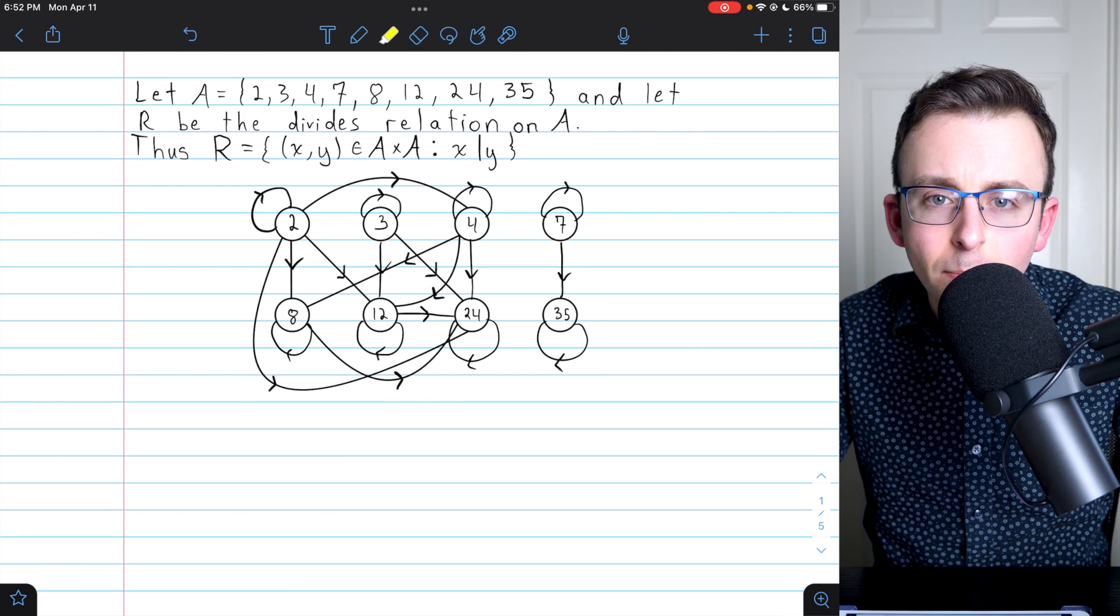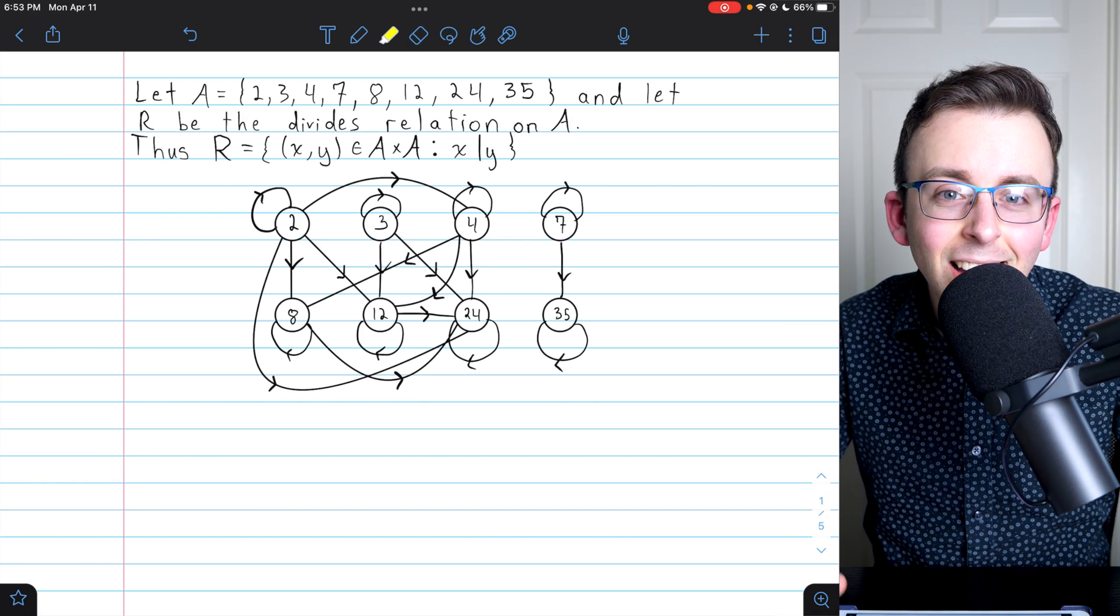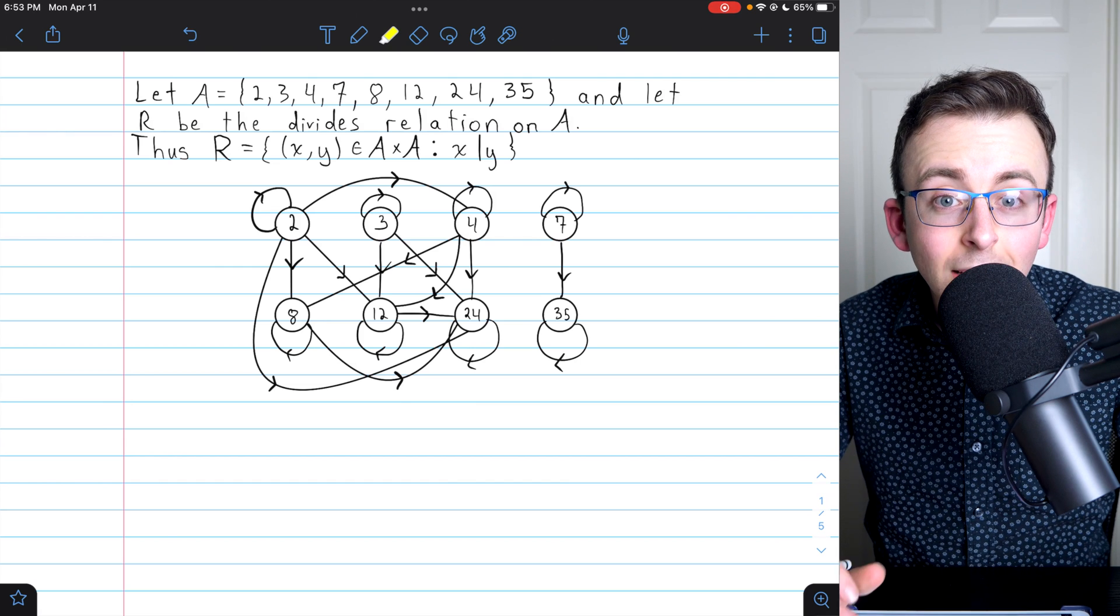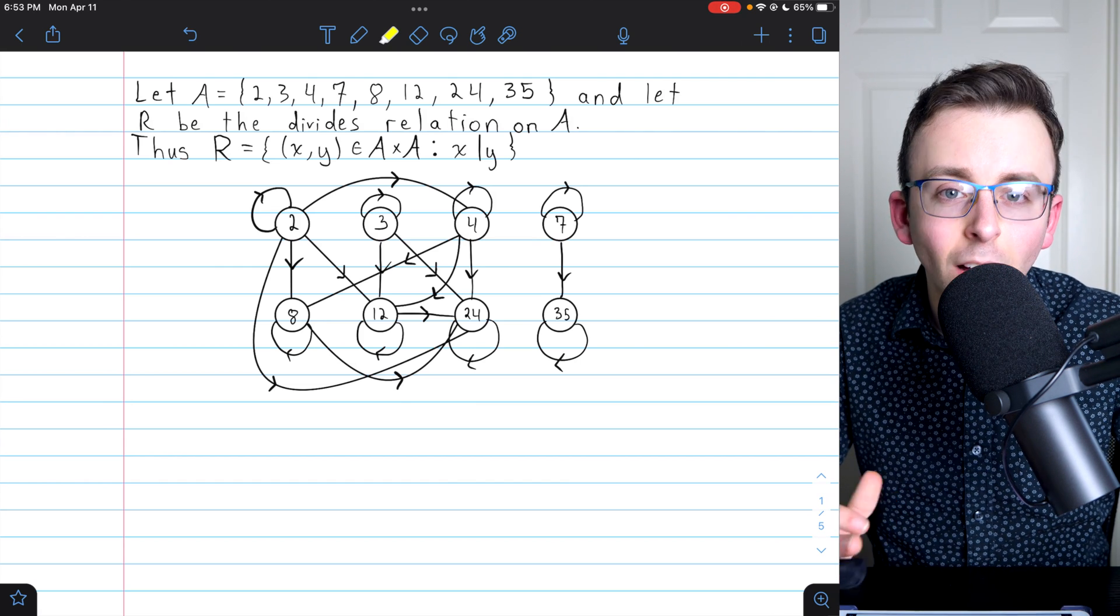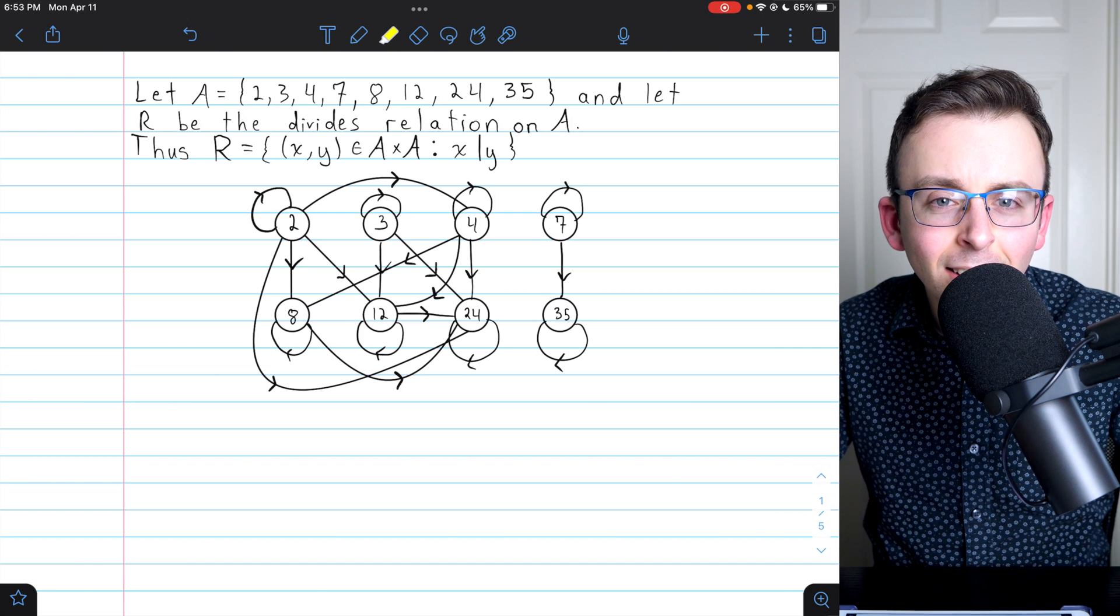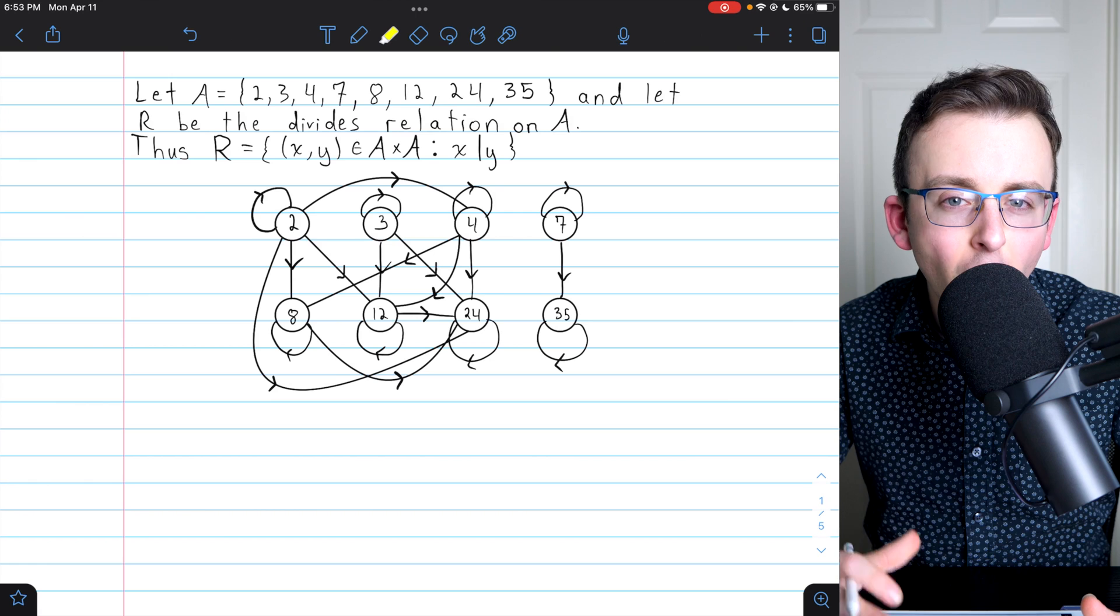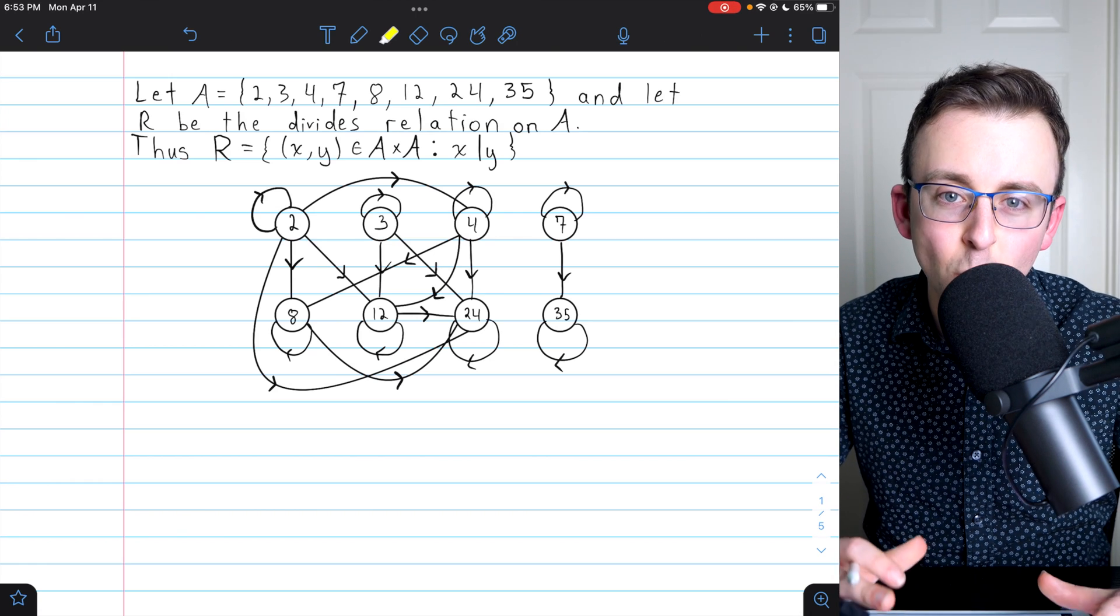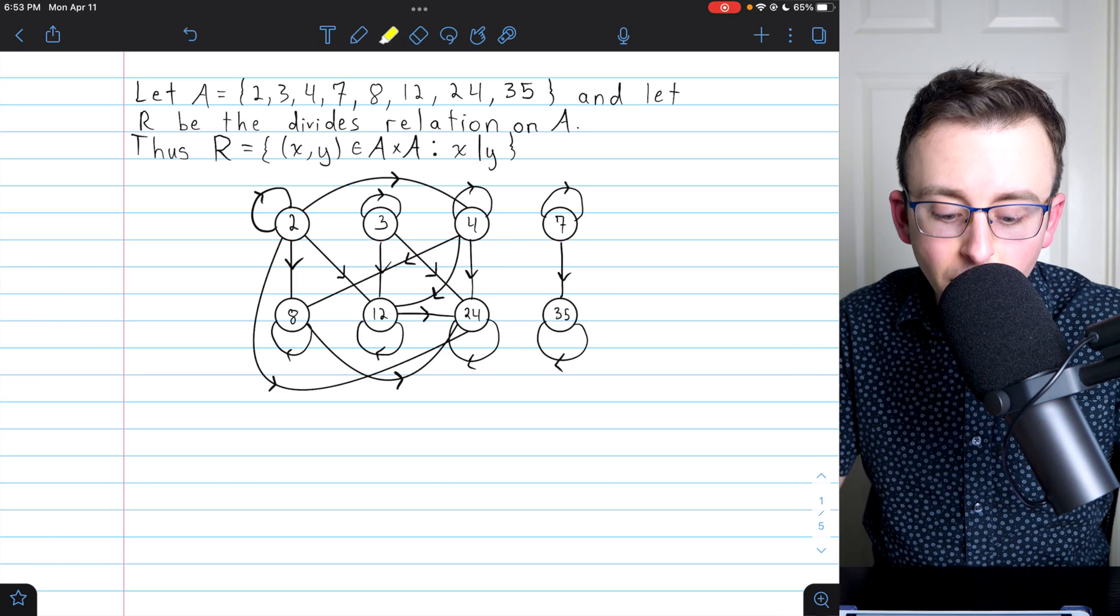I think I got everything. That is the directed graph that represents our partially ordered set. What you might notice about it if you look closely is that it's a complete disgusting mess and doesn't really appear all that helpful. Now, if we turn this into a Hasse diagram, it's going to look a lot nicer, and a Hasse diagram is created by basically just applying some common sense restrictions to this picture.